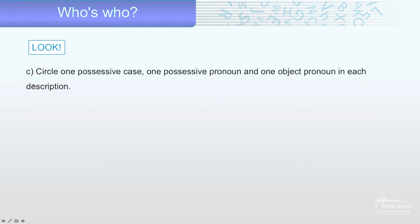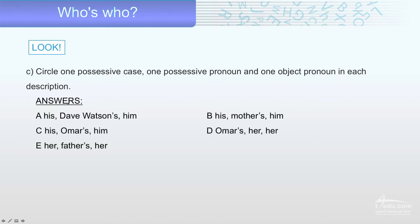Now circle one possessive case, one possessive pronoun, and one object pronoun in each description. Let's see. In description A: 'her' is a possessive pronoun, 'Dave Watson's' is a possessive case, and 'him' is an object pronoun.